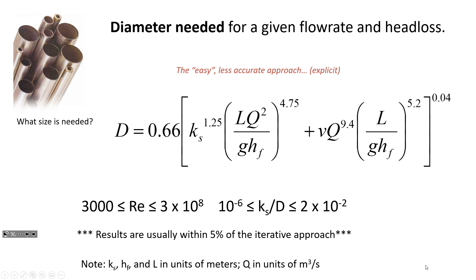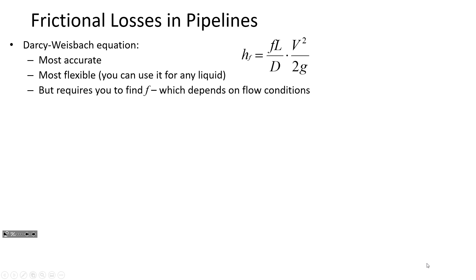The Darcy-Weisbach equation, which we've been mostly focusing on, is the most accurate and most flexible of the empirical resistance equations — you can use it for any fluid, any range of conditions, any pipe diameter. The tricky part is determining f; you can use the Moody diagram, the Jain equation, or the Colebrook equation, but it's non-trivial because f changes depending on flow conditions. The other two methods we'll look at today are easier but less accurate because their friction factor doesn't adjust with flow conditions — it's fixed.